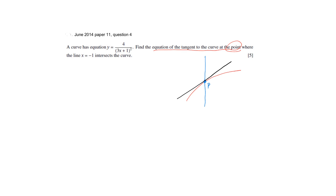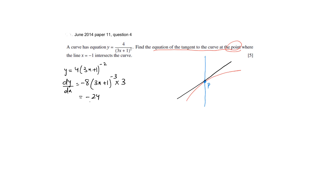In order to find the equation of the tangent you need the gradient of the tangent and you need the point. So the curve equation is 4(3x+1) raised to the power of negative 2. When you take dy/dx you differentiate the function and get minus 8 times (3x+1) raised to the power of negative 3 times 3, the derivative of the inside bracket. The gradient comes out to be minus 24 over (3x+1) cubed. That's the gradient expression.